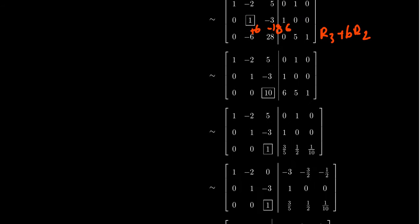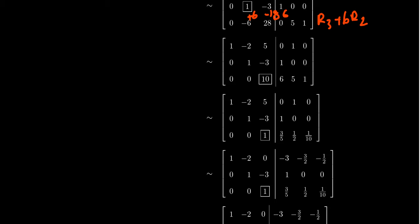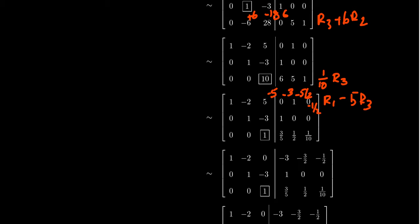That finishes the forward phase of our Gauss-Jordan elimination. The next thing to do is to scale. We're going to scale row 3 by 1/10. That makes 10 go to 1, 6 go to 3/5, 5 go to 1/2, and 1 go to 1/10. Now we want to get rid of the things above the pivot position. To get rid of this 5, we take row 1 minus 5 times row 3. We get 0, -3, -3/2, -1/2.